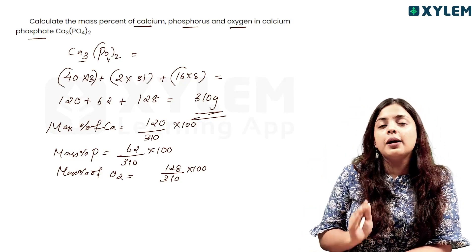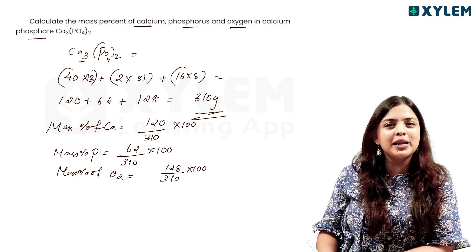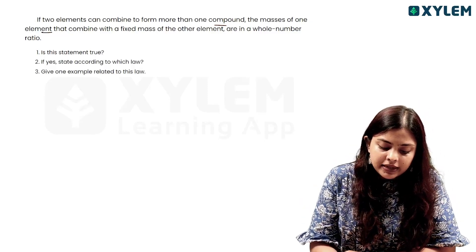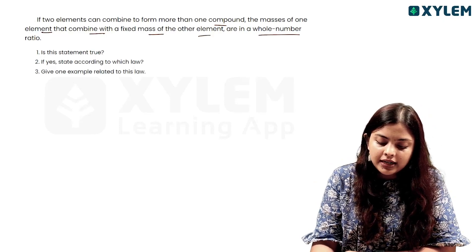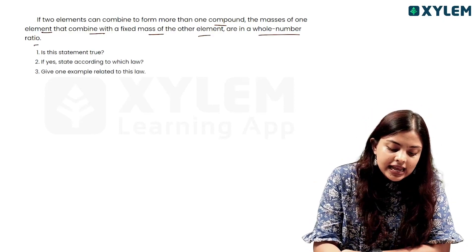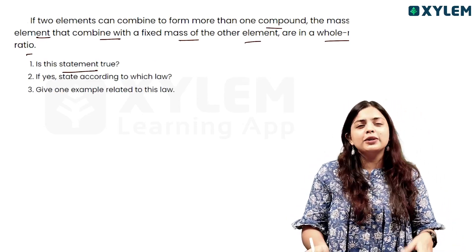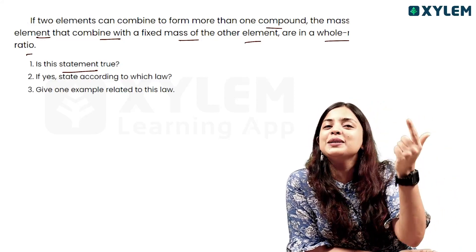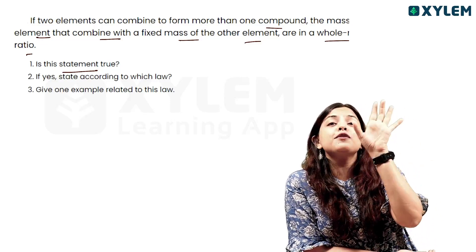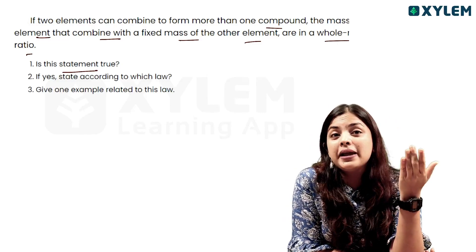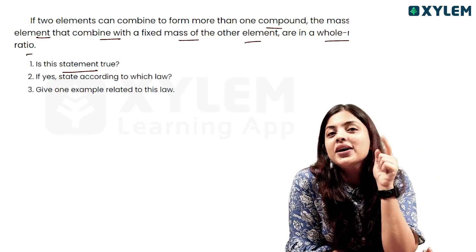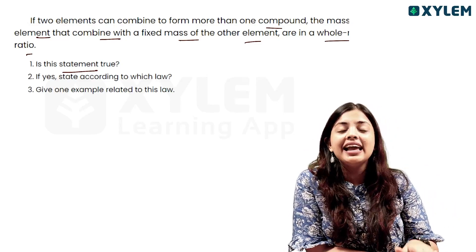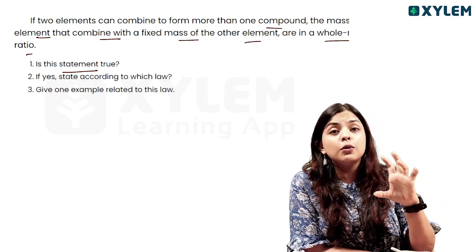Next question: if two elements are combined to form more than one compound, the masses of one element that combine with the fixed mass of the other element are in a whole number ratio. We have to say this is the Law of Multiple Proportions.